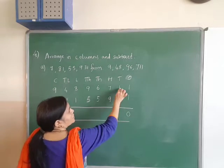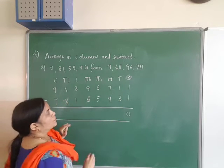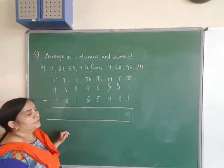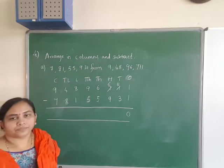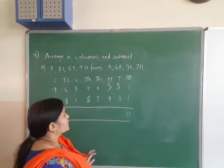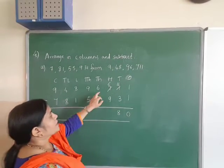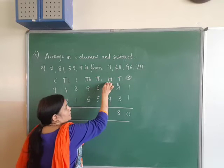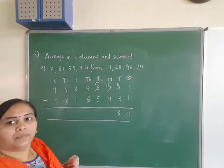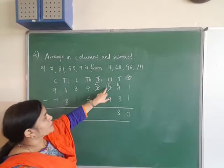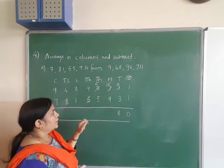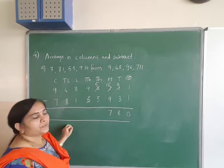1 minus 1 is 0. 1 minus 3 — we cannot do. So carry over: this will become 6, this will become 11. 11 minus 3 is 8. Next, 6 minus 9 — we cannot do. So this will be 16, this will become 5. 16 minus 9 is 7.